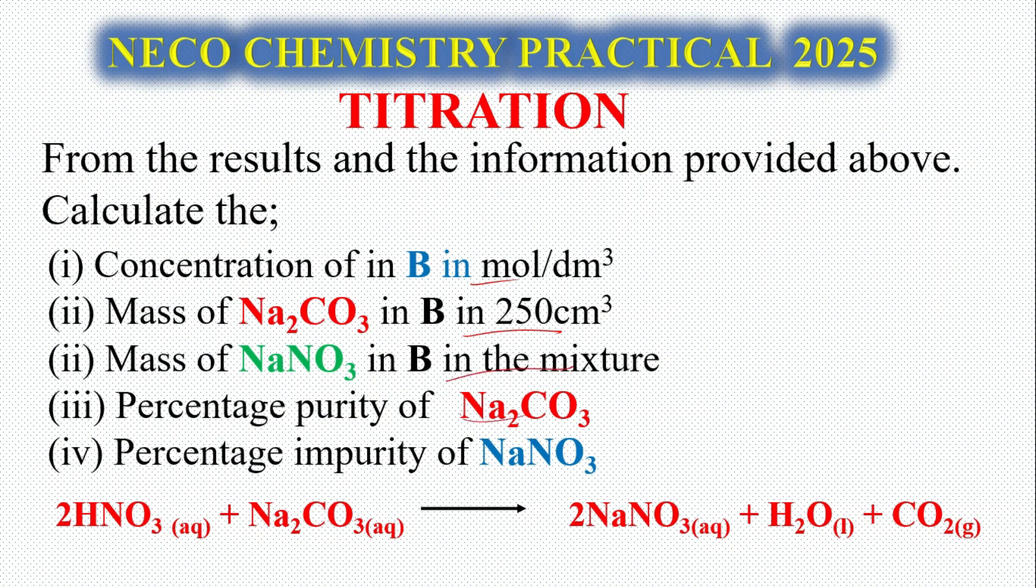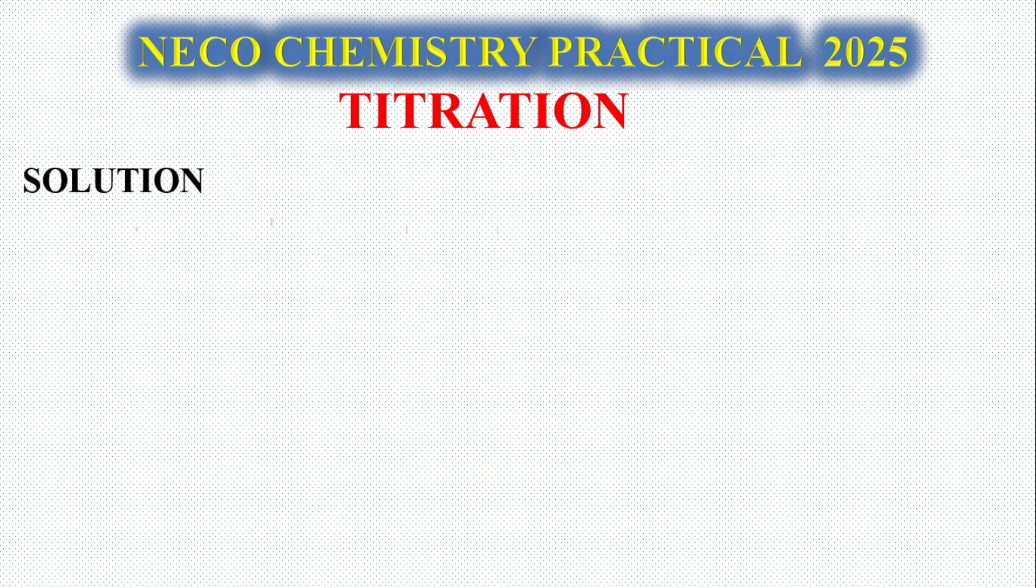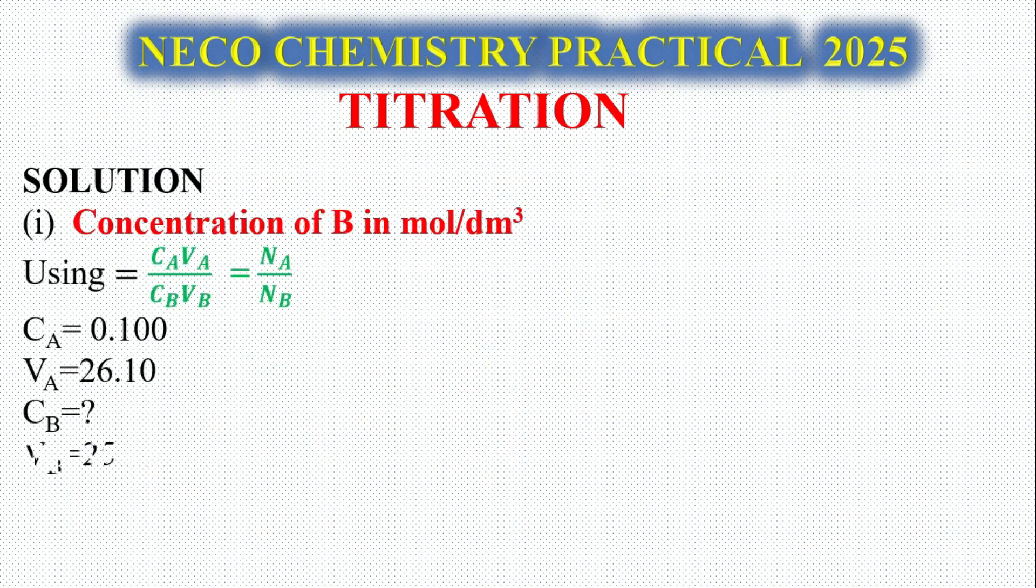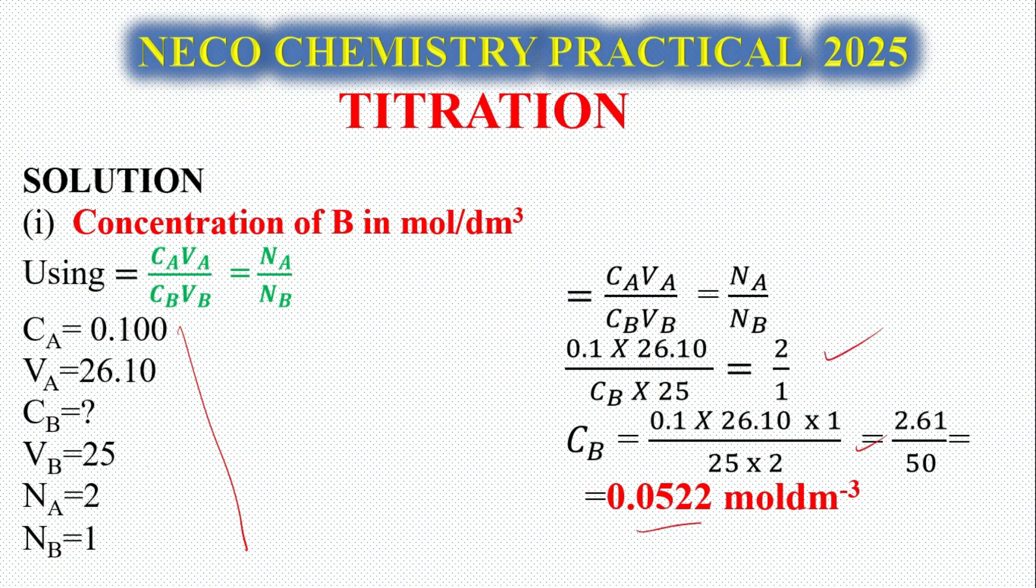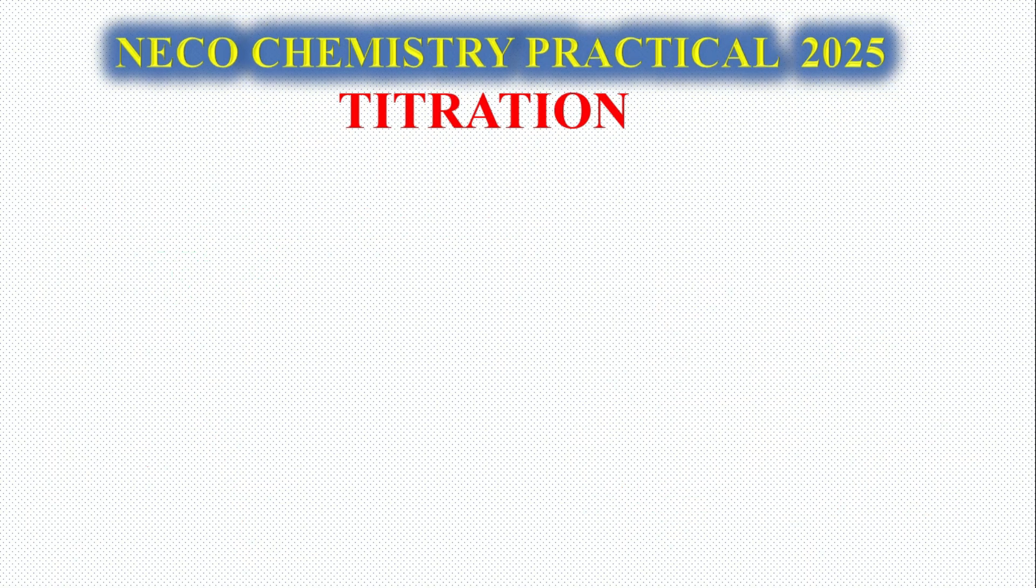Let's look at the expected questions. They say: calculate the concentration of Na2CO3 in B in mol per dm³, mass of Na2CO3 in 250 cm³, mass of NaNO3 in the mixture, percentage of purity of Na2CO3, and percentage of impurity of NaNO3. Let's solve that problem.